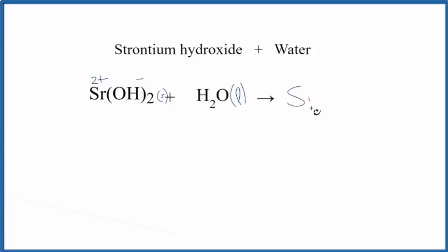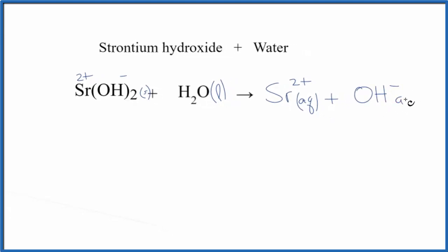So we'd have Sr2+ we'll write aq, that's dissolved in water, plus we'd have the hydroxide here, OH minus, that would be aqueous as well, and this two means we'd get two separate hydroxide ions for each strontium ion.